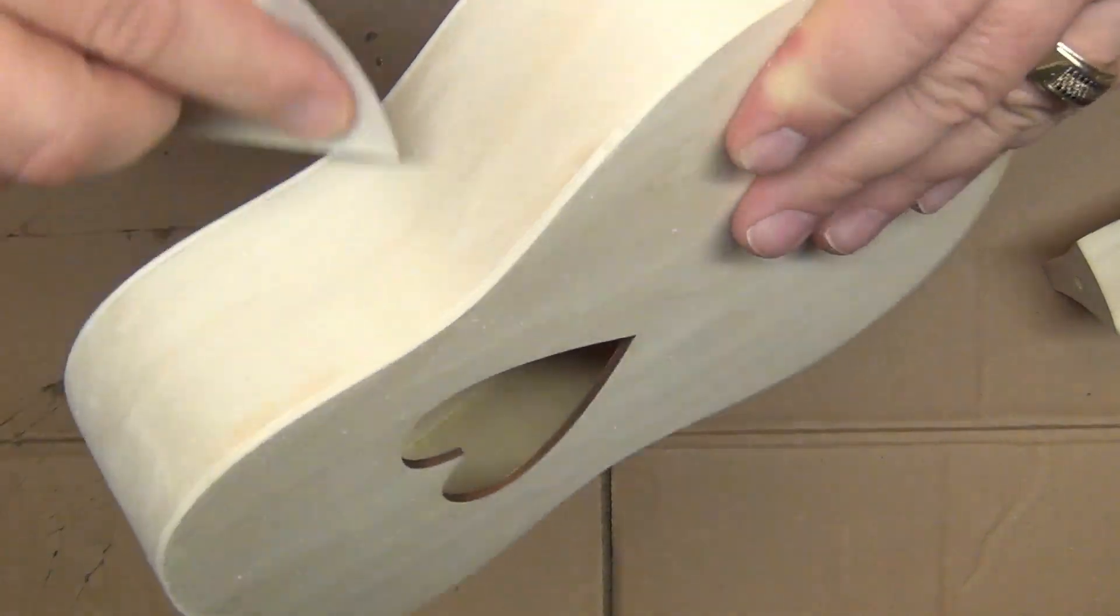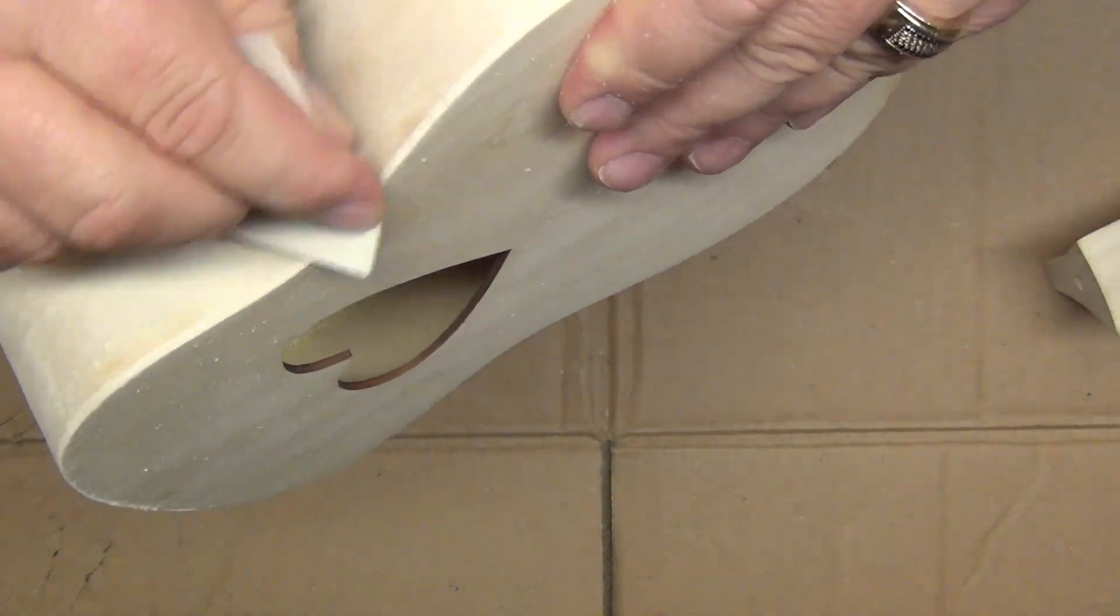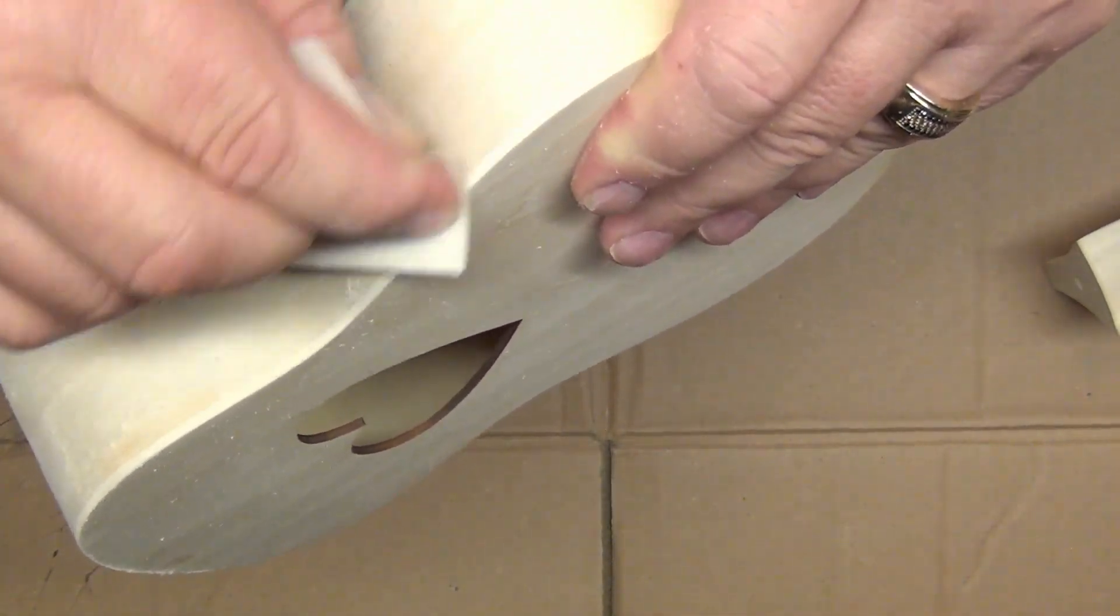Next, using the same 220 grit paper, I worked on the sides to get them smoothed out.